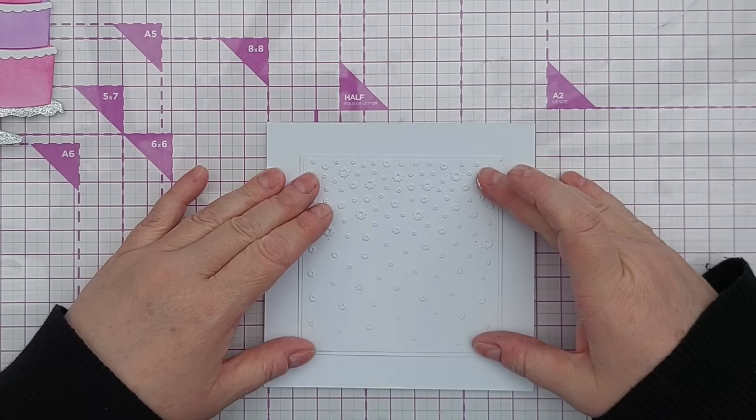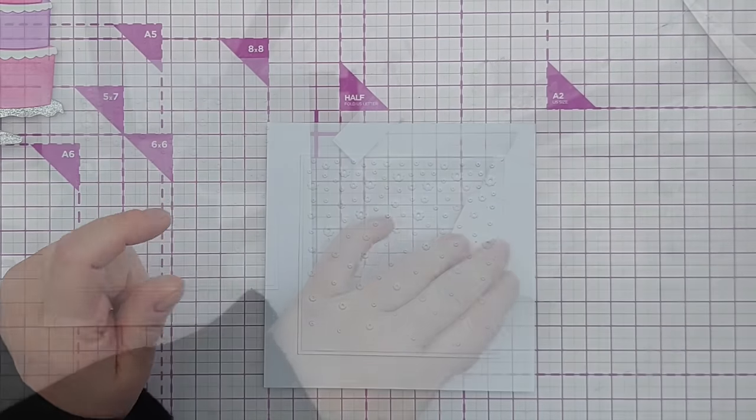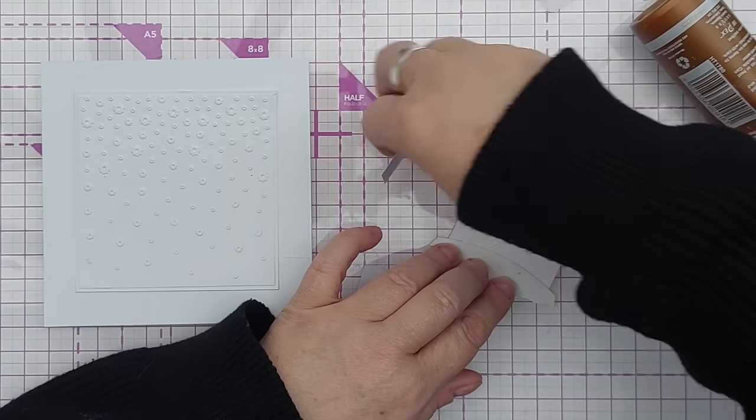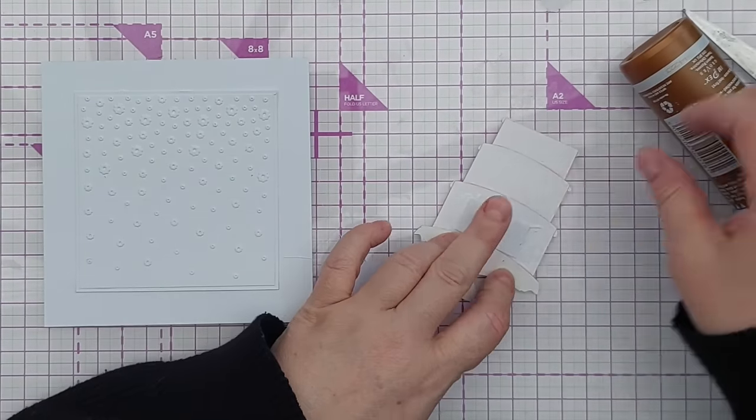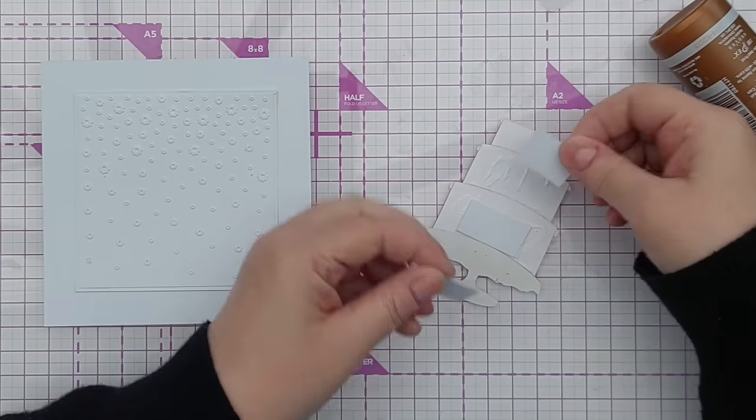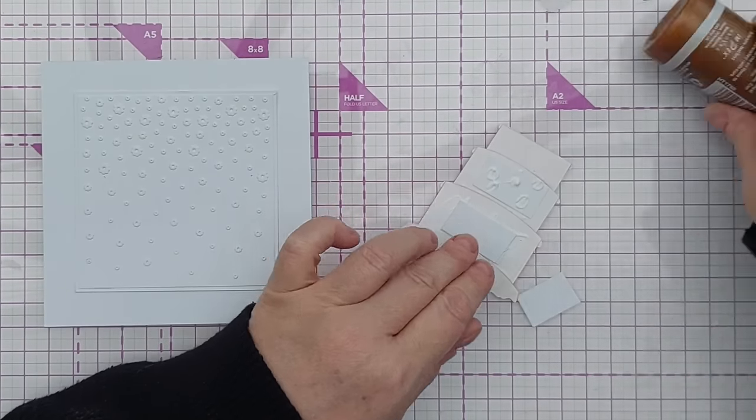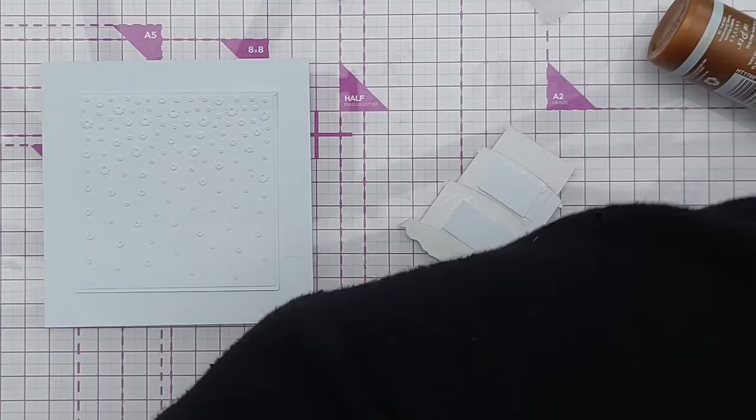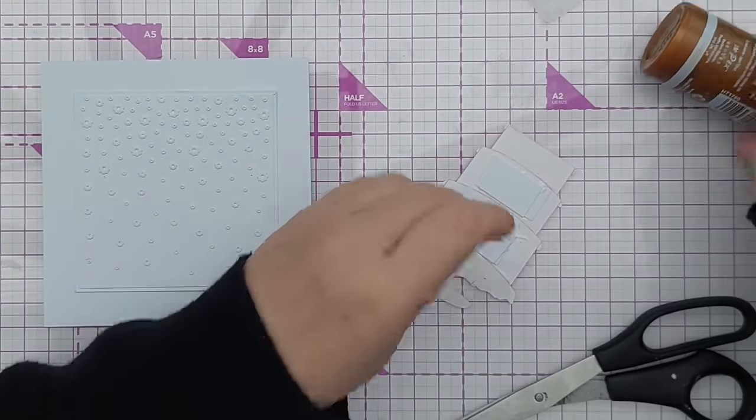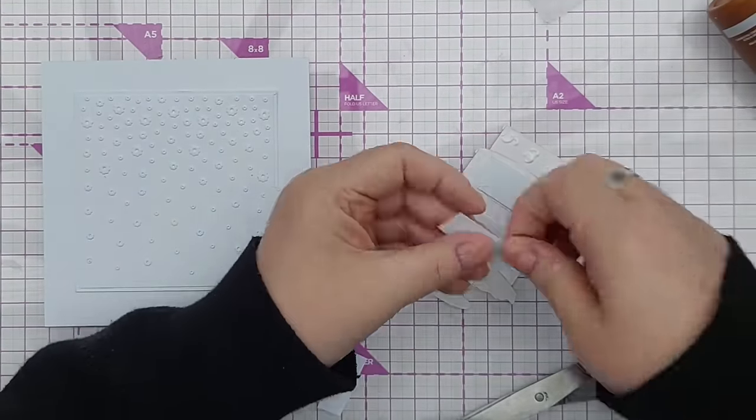Before I stuck my cake down though I added some bits of card to the back of my cake, two layers on each layer of cake just to help it stay level on the card. There's actually quite a few layers to this cake once everything's stuck together so it needed to be leveled out.